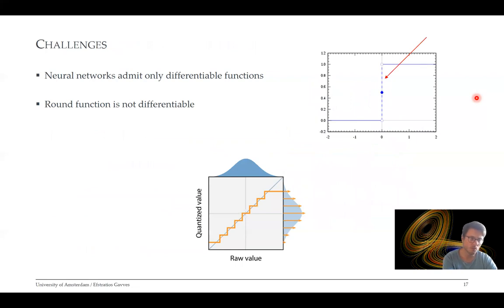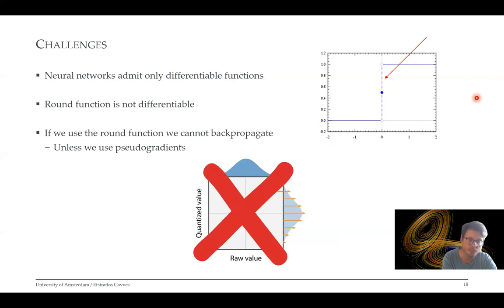Instead, a better idea would be to consider the quantization during training. But what are the challenges for this? The challenges are that neural networks admit only differentiable functions because we want to use backpropagation, the workhorse of our optimization. The problem is that round functions are not differentiable because you've got this infinite slope. This means that if we were to use the round function in our neural network definition, we wouldn't be able to backpropagate. Of course, we can use pseudo-gradients, which has been proposed in the past, but that would generate a biased model that is optimizing something different from what we have in our objective.